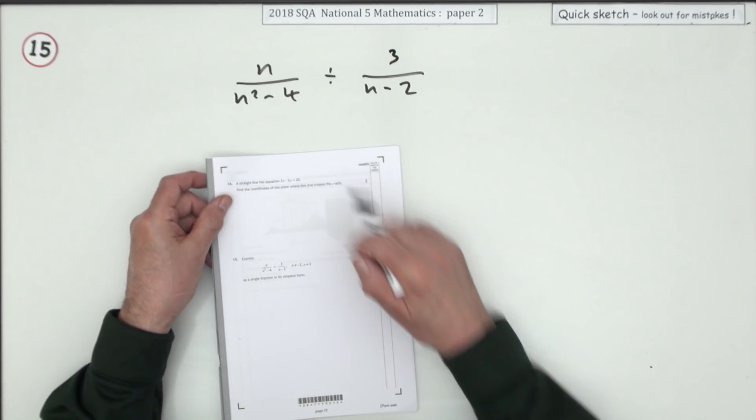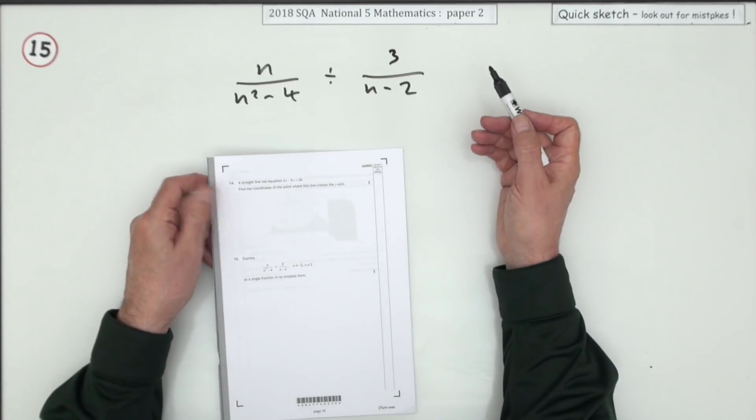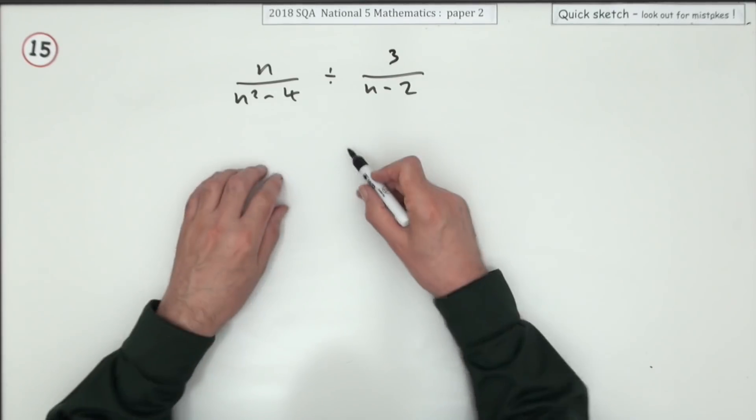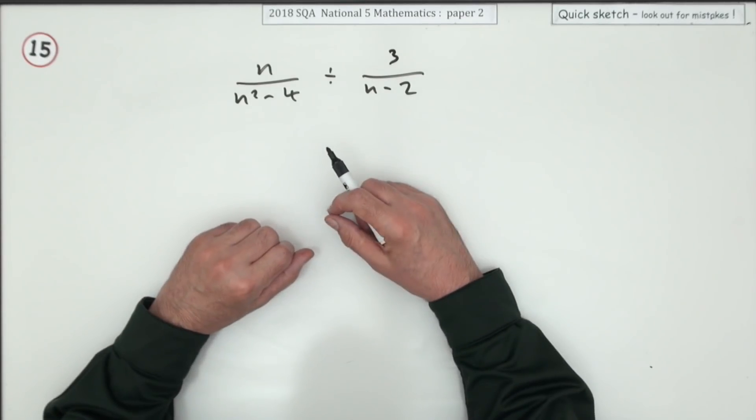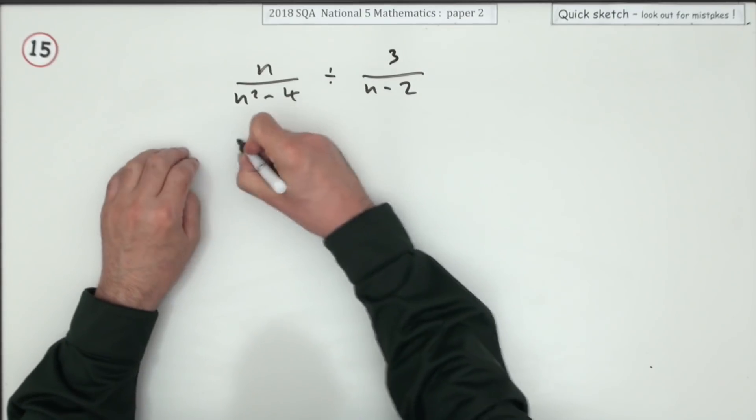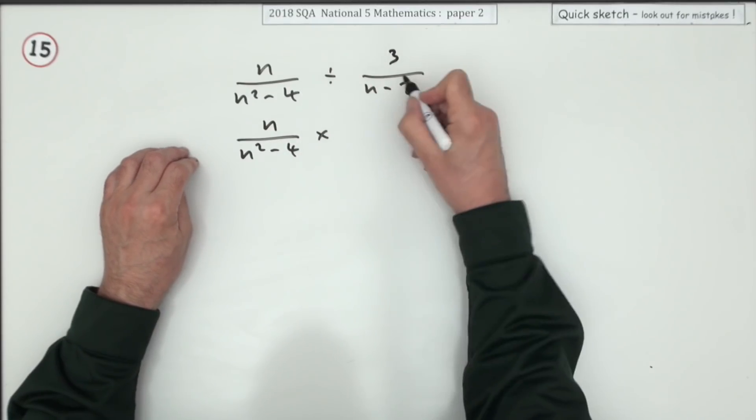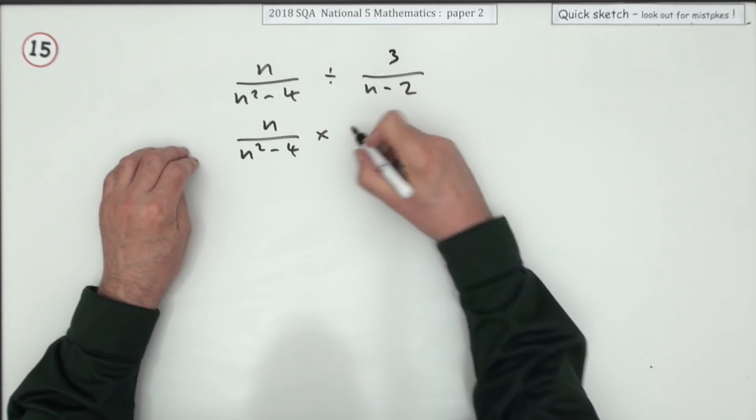Number 15 from paper 2, the 2018 National 5 Maths: express this as a single fraction in its simplest form. You're going to be multiplying fractions here, so you're looking for things to cancel—difference of two squares. But first of all, I'll write it as a product. Instead of dividing by a fraction, multiply by the reciprocal.